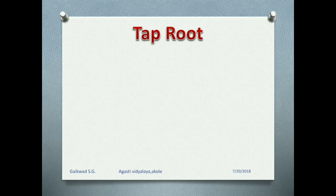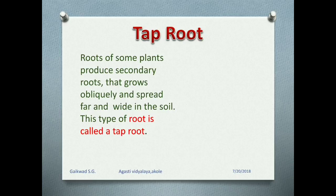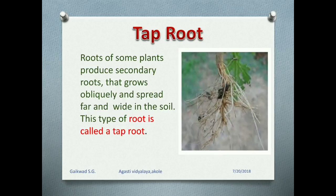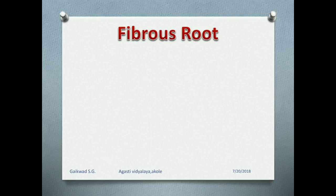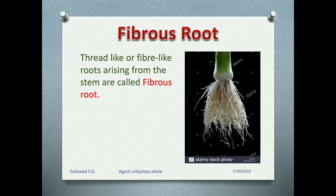There are two types of root. First is tap root. Roots of some plants produce secondary roots that grow obliquely and spread far and wide in the soil — this type of root is called a tap root. The second type of root is fibrous root. Thread-like or fibre-like roots arising from the stem are called fibrous roots. Look at this diagram.